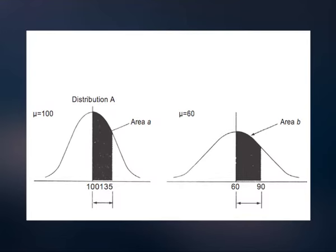Look at the figure. Here we have illustrated two normal probability distributions, each with a different mean and a different standard deviation. Both area A and area B — the shaded areas under the curve — contain the same proportion of the total area under the normal curve. Because both these areas are defined as the area between the mean and one standard deviation to the right of the mean. All intervals containing the same number of standard deviations from the mean will contain the same proportion of the total area under the curve for any normal probability distribution. This makes possible the use of only one standard normal probability distribution table.